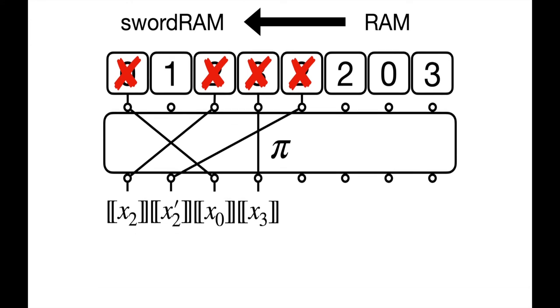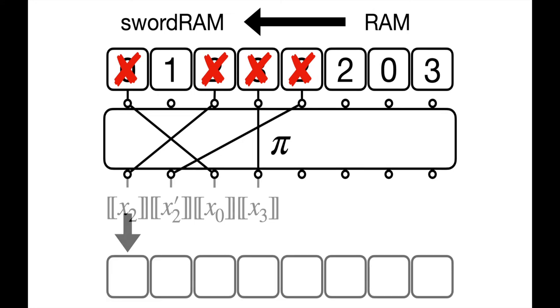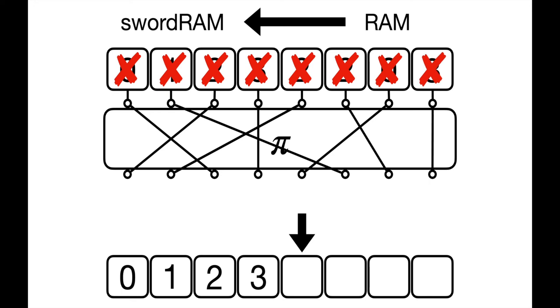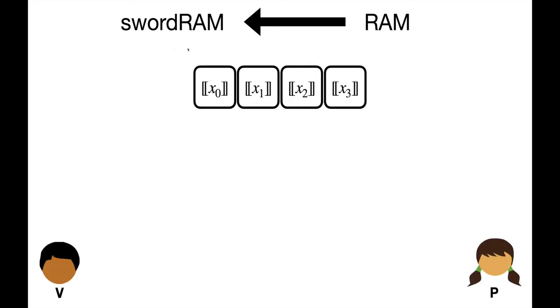However, also notice that there remain n available reads, and that those reads contain the most recent copy of each RAM index. To continue, we use our remaining reads to extract the RAM content from our now-exhausted sword RAM and then rewrite these values into a fresh sword RAM one at a time. Once we have copied the RAM content in this way, we are ready to handle n more accesses. By repeating this process, our RAM can support arbitrary numbers of accesses. So by using sword RAM, we can construct an efficient RAM.